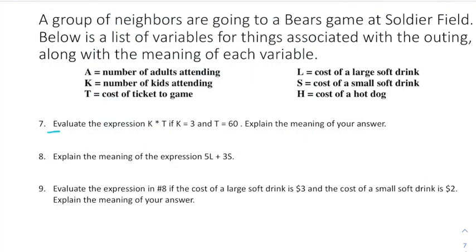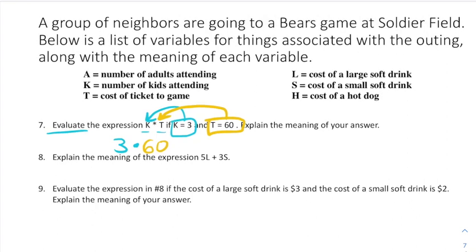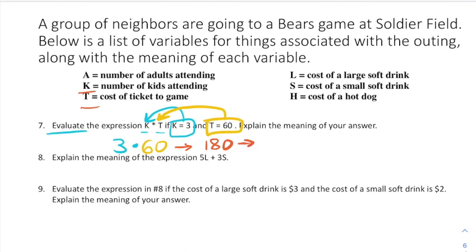Next we're asked to evaluate, meaning plug in. Evaluating K times T where K equals 3 and T equals 60: we plug 3 in for K and 60 in for T, giving 3 times 60 equals 180. What does this result mean? Multiplying the number of kids by the cost of a ticket represents the total cost of kids attending, so it costs $180 for kids' tickets.